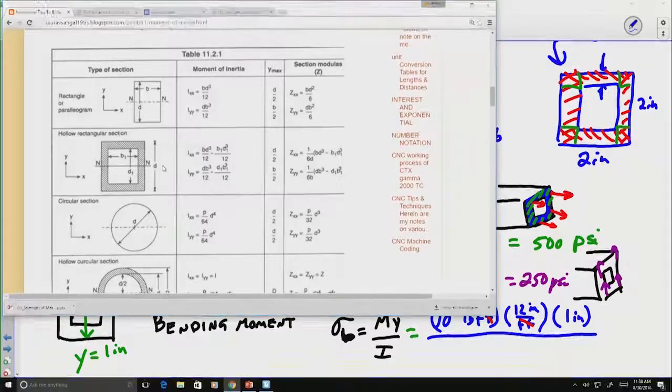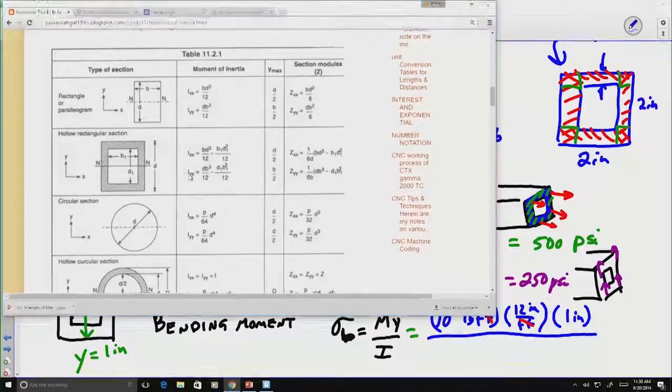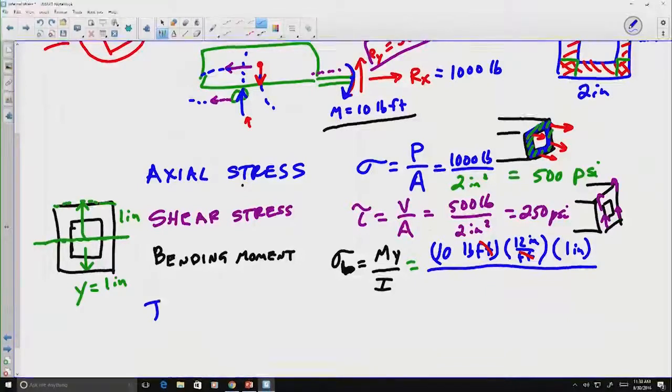Let's go ahead and call those W for width. If we do that, notice we've got some equations here that include the outside, B and D, and the inside, B1 and D1. Let's go ahead and see if we can record those here. And in this case, the formula it gave us was Ixx.